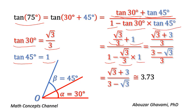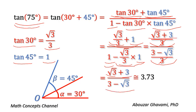Square root of 3 divided by 3 plus 1 equals square root of 3 plus 3 divided by 3. And 1 minus square root of 3 divided by 3 times 1 equals 3 minus square root of 3 divided by 3. Cancelling out 3 from numerator and denominator, we get tangent of 75 degrees equals square root of 3 plus 3 divided by 3 minus square root of 3.